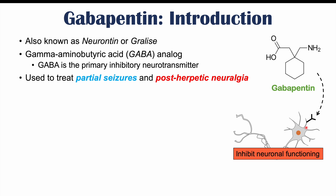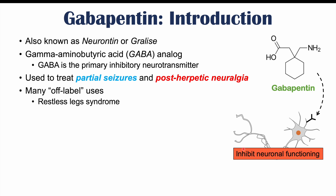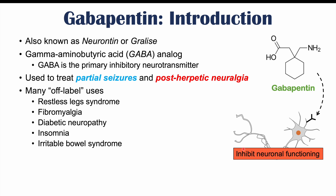Gabapentin is utilized for particular conditions. Some include partial seizures and postherpetic neuralgia — a nerve pain that occurs after a shingles infection. These conditions are helped by gabapentin's ability to inhibit neuronal functioning. There are also many off-label uses, which is where we see the majority of conditions associated with gabapentin: restless leg syndrome, fibromyalgia, diabetic neuropathy, insomnia, and irritable bowel syndrome. All of it relates to inhibition of neuronal functioning.